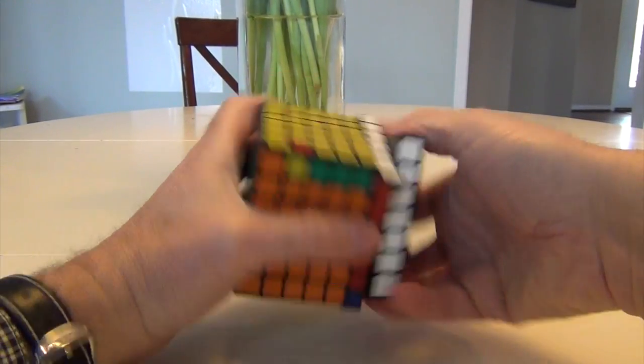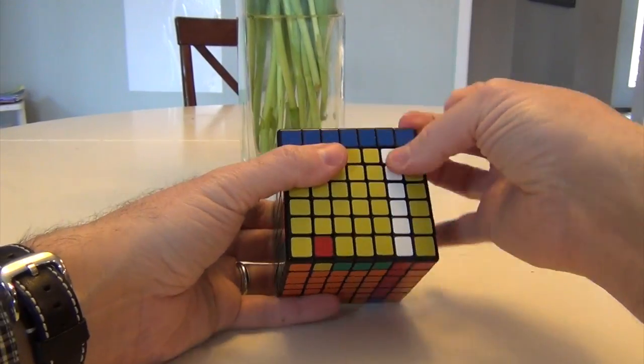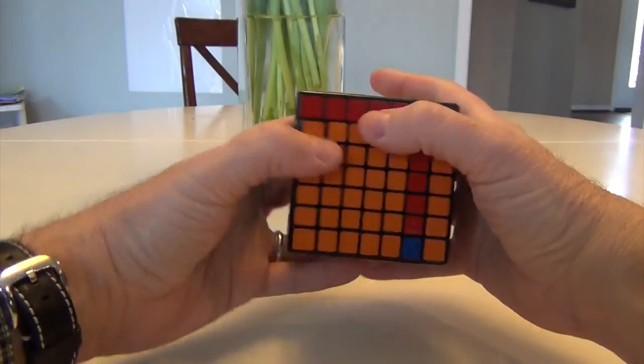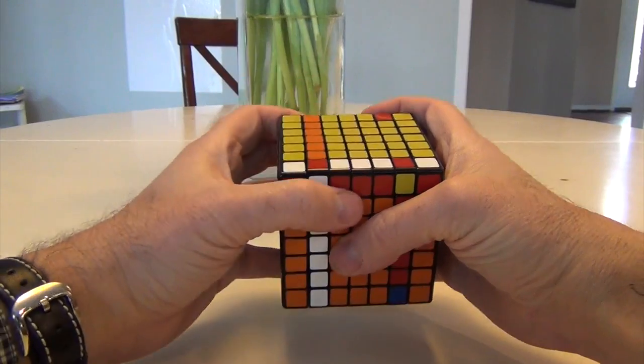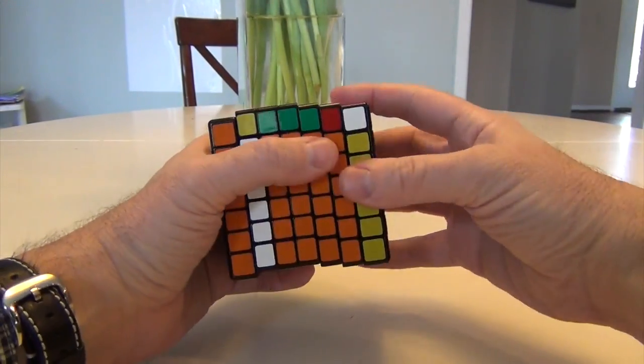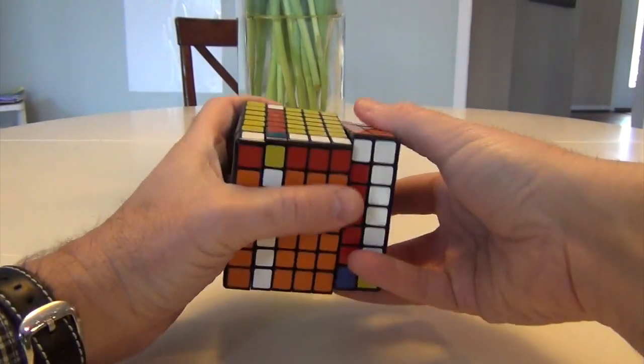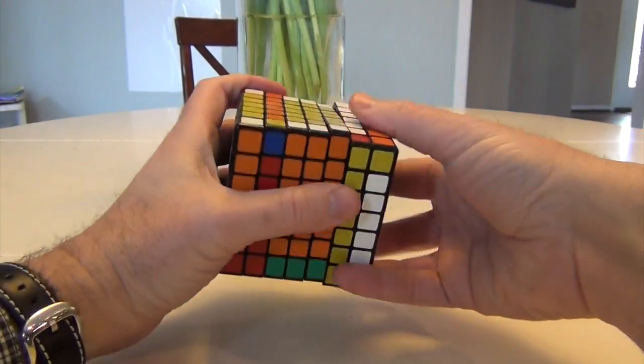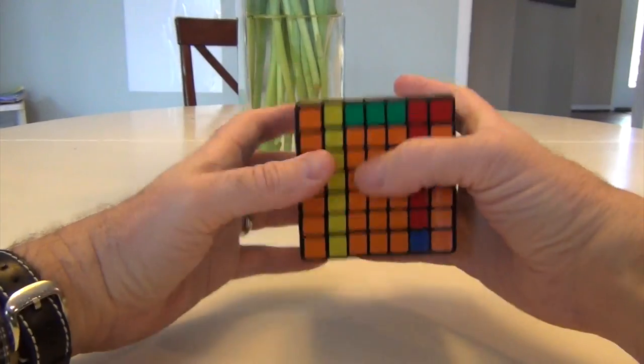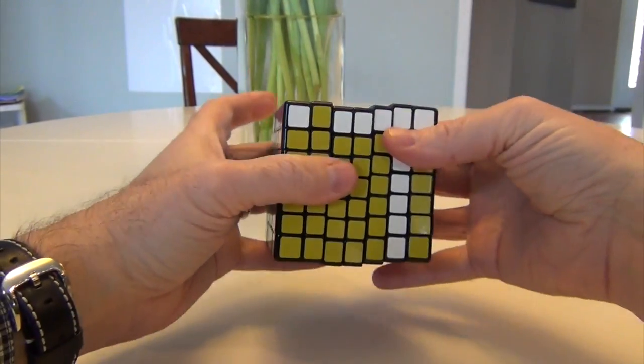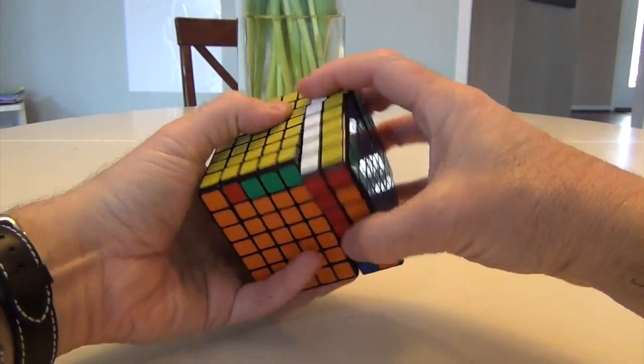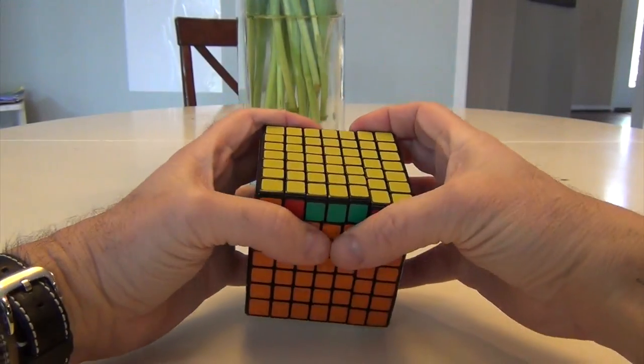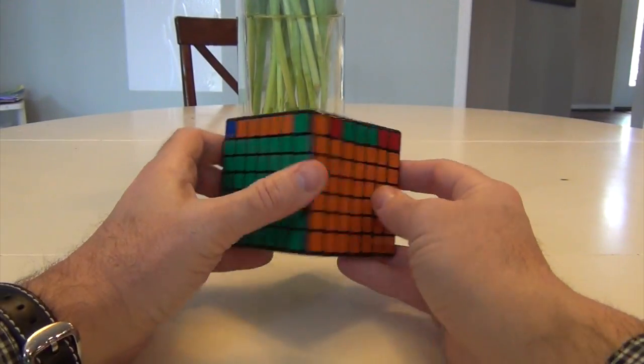This is really just a rotation algorithm to rotate edges and basically flip them over. So this is going to be my R, and this is going to be my L move. That's going to be 2R, 2B, 2U, L, 2U', R', 2U', R, 2U', 2F, R, 2F, then L', 2B, 2R. So you can see that now they're all oriented correctly.